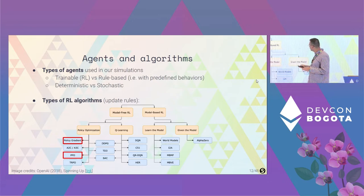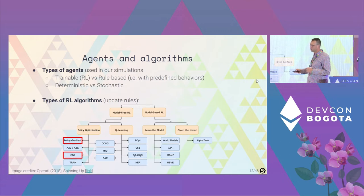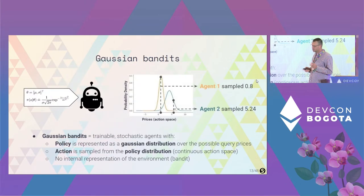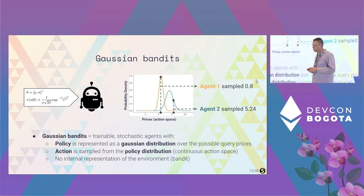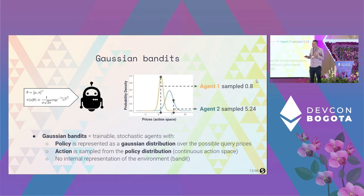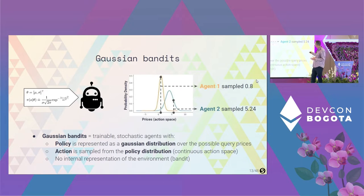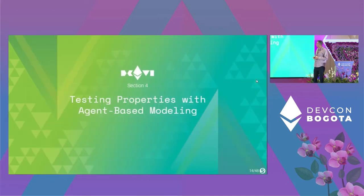We highlighted two RL algorithms we use in our simulations: vanilla policy gradients and PPO. The most important agent type we focus on is what we call Gaussian bandits — a trainable stochastic agent whose policy is represented as a Gaussian distribution. When the agent needs to take an action, it samples from that distribution. It's called a bandit because the agent does not build an internal model or internal representation of the environment.